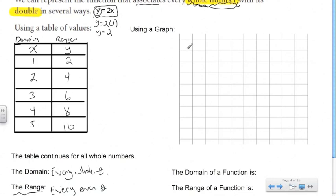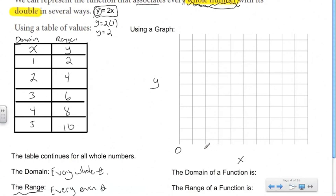Now that we've done the table of values, let's graph it. X is the domain — the domain always goes on the horizontal axis, and the range always goes on the vertical axis. We need to create our scale. The domain goes from 1 to 5, so skipping every line gives us 1, 2, 3, 4, 5. And the range goes from 2 to 10, so we'll count up to 10 on the vertical axis.